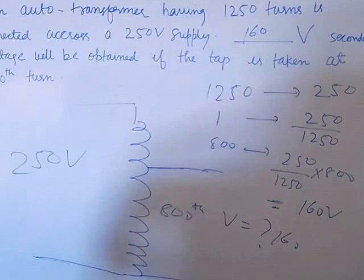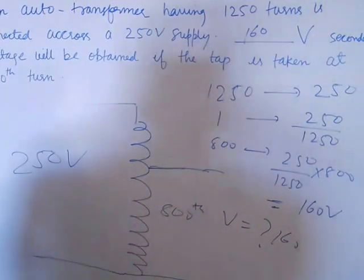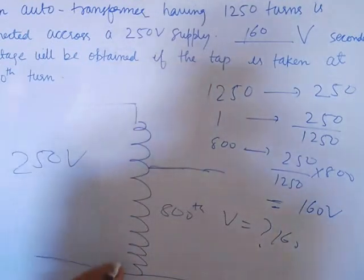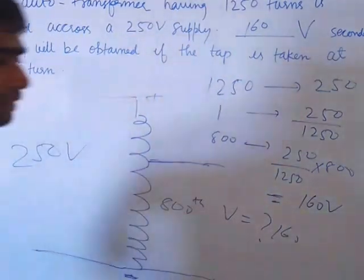Primary winding 250 volt, secondary voltage obtained 160 volt. Tapping 800 turns. This is the reference value. Thank you.